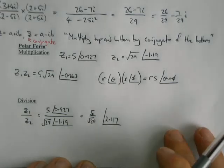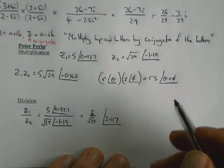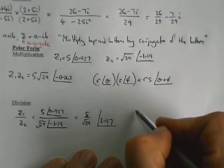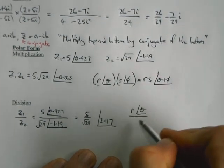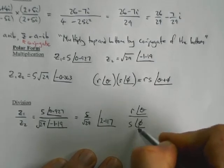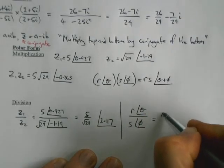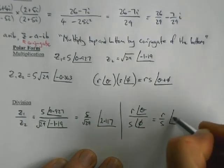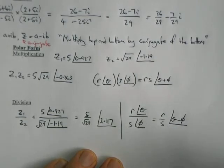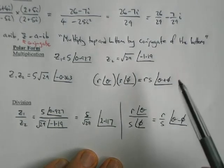In general form, if we have complex numbers that we're looking to divide, we just divide the sizes and subtract the angles. Notice that the order does matter.